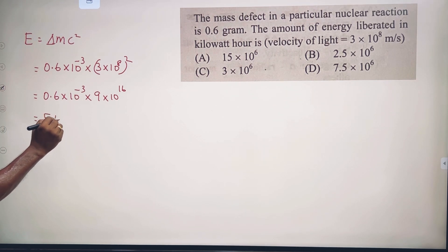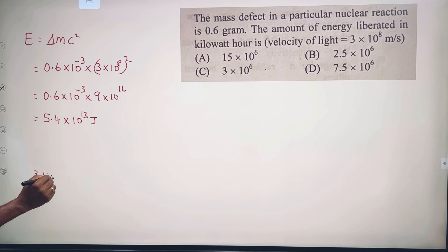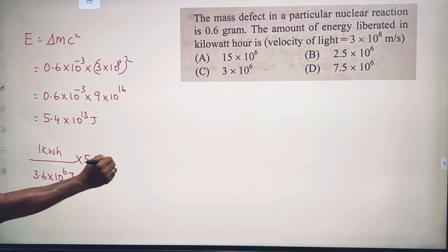This equals 5.4 into ten power thirteen joules. To convert to kilowatt hours: one kilowatt hour equals 3.6 into ten power six joules. So 5.4 into ten power thirteen joules divided by 3.6 into ten power six equals 1.5 into ten power seven kilowatt hours. Option C.